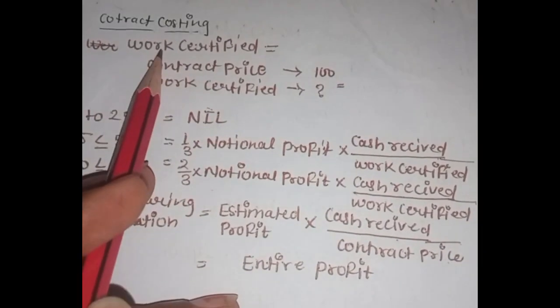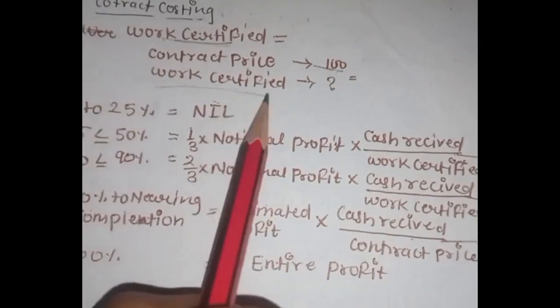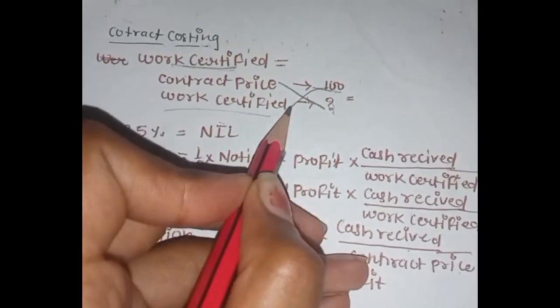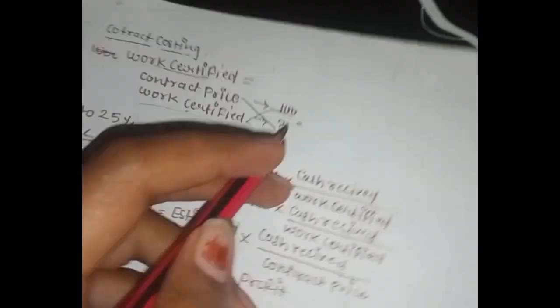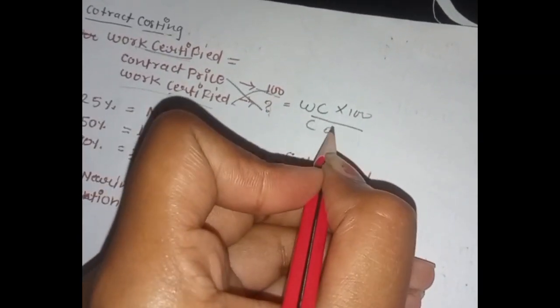Contract costing. We will call 100, that is the contract price. We will call it into this, and this is the into 100 divided by the contract price. Follow it every time, it will be easy.